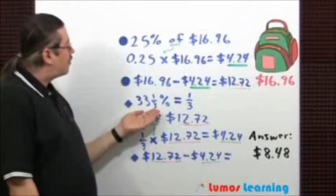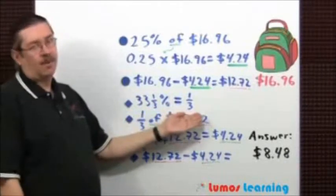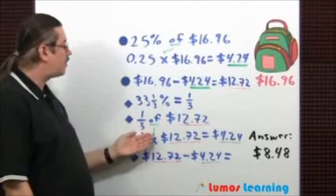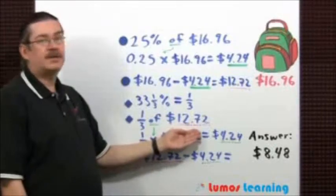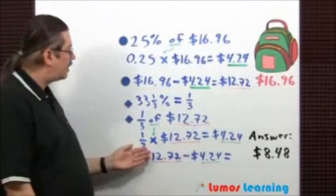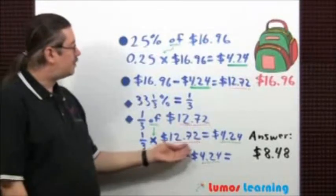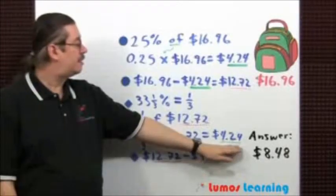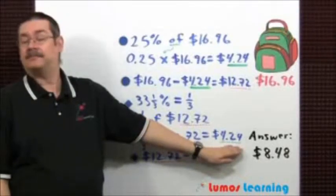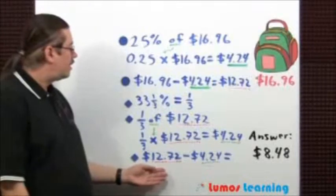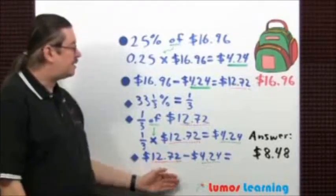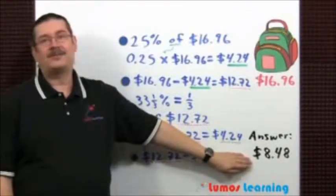Next, 33 and one-third percent is really just one-third, so let's find one-third of the discount price of $12.72. So just multiply one-third times $12.72 and you get $4.24 again. Subtract this value from the discount price and you get the answer of $8.48.